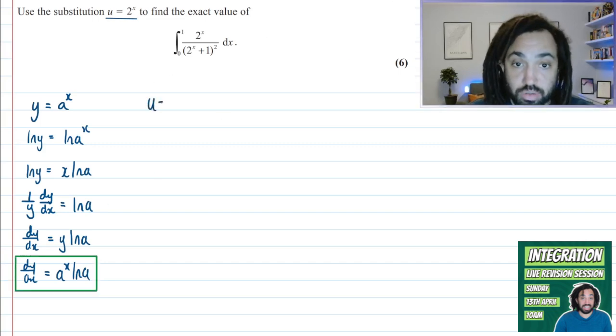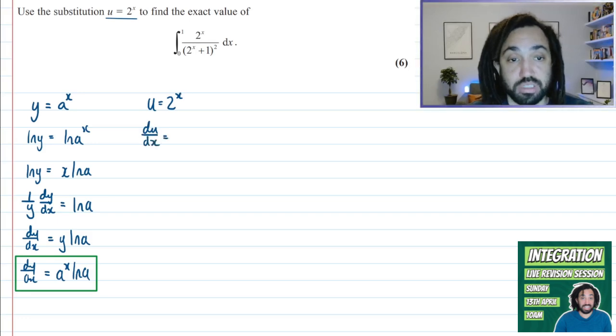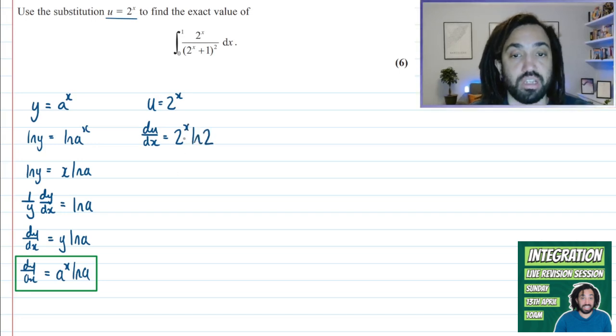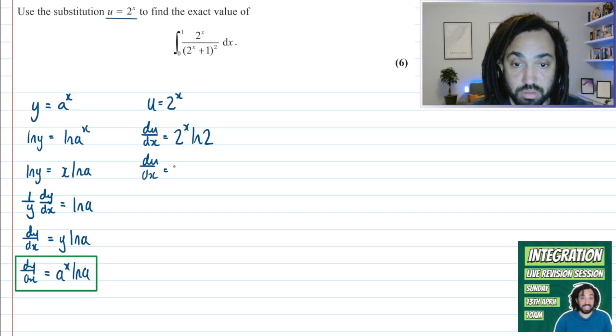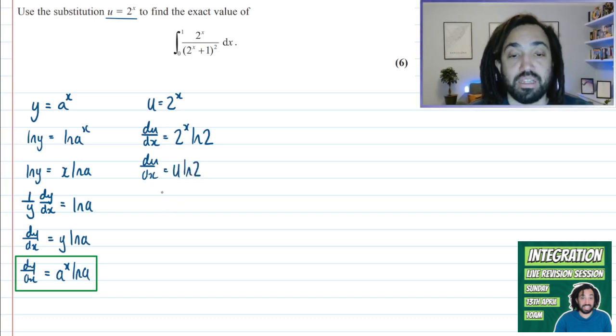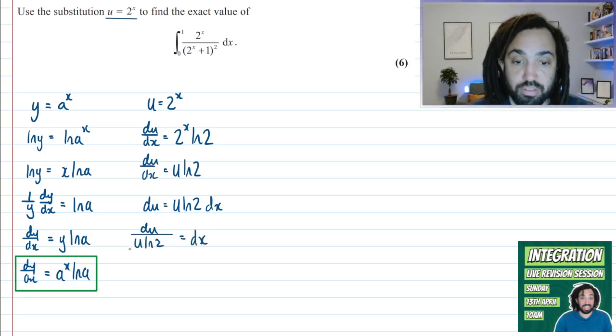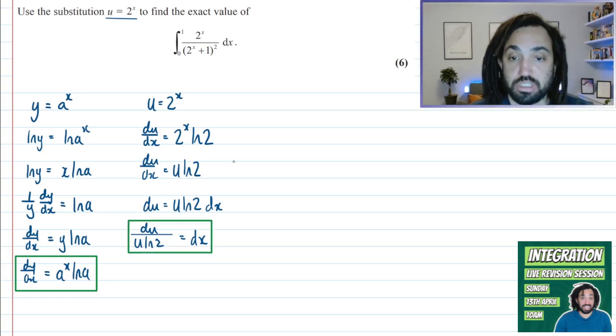So our substitution says that U is equal to 2 to the X. So in this case, I will find DU by DX by differentiating 2 to the X. And just like here, A to the X gives us A to the X ln A. 2 to the X will give us 2 to the X ln 2. And we want to swap out all the X's as best as possible, so 2 to the X we know is U. So we can just swap that straight out. So we can say DU DX is equal to U ln 2. And then I want to make DX the subject, so I multiply both sides by DX. And then I'll divide both sides by U ln 2. And that gives me DX. Perfect. Right, so that's important when we do an integration by substitution, so we'll use that later.